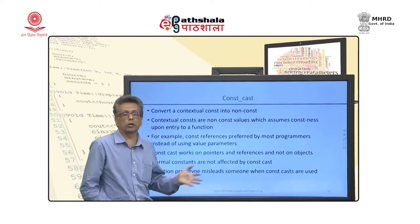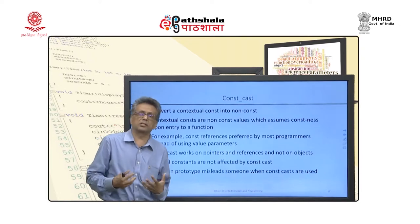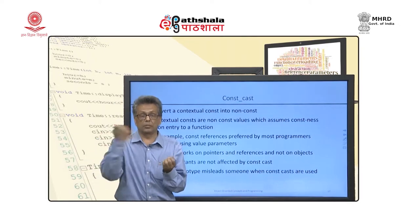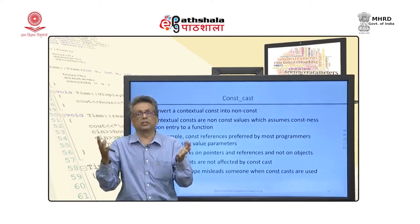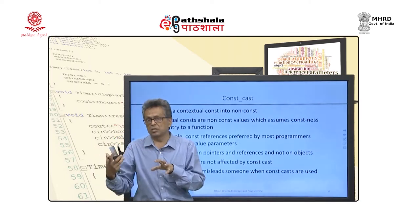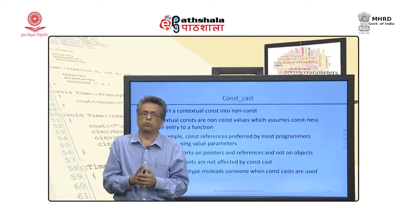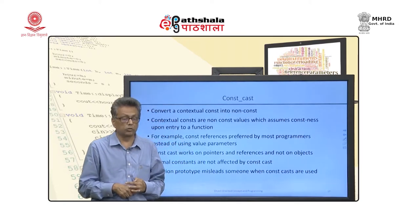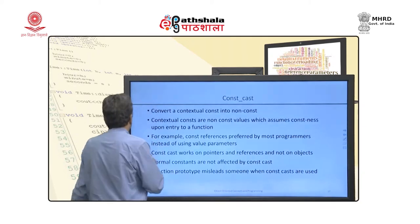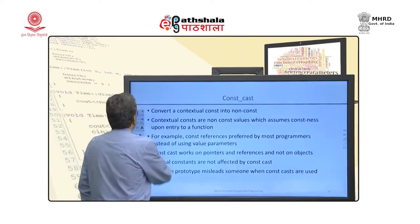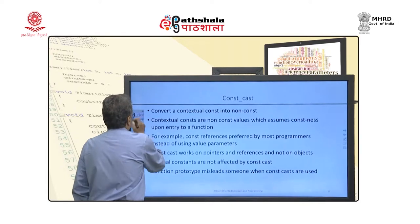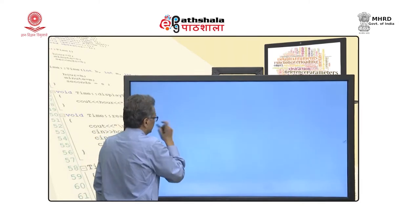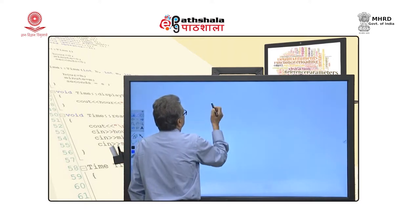One is called const cast. Const cast converts a const item into non-const. This is surprising, but this const is not a conventional const — it is called a contextual const. It is always a good idea to code using const references for function parameters to avoid the overhead of passing large objects by value.